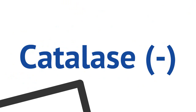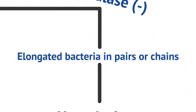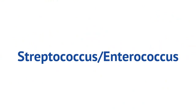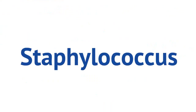Catalase-negative gram-positive cocci are further described as elongated bacteria in pairs or chains. This subset of organisms is called streptococcus or enterococcus. Again, gram-positive, elongated, in pairs or chains.